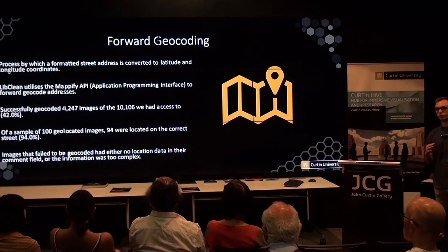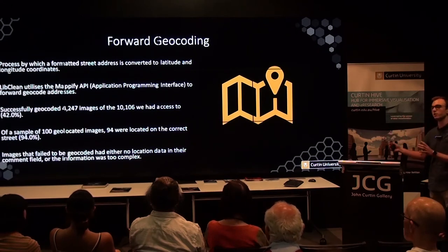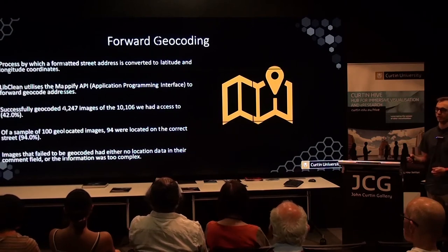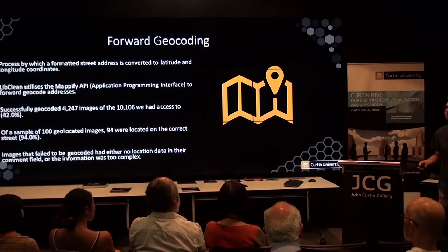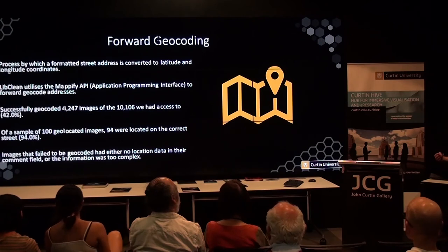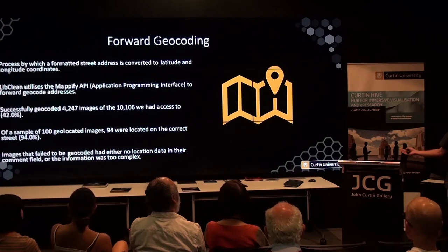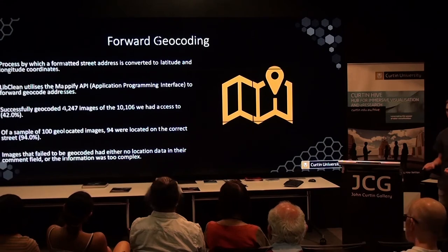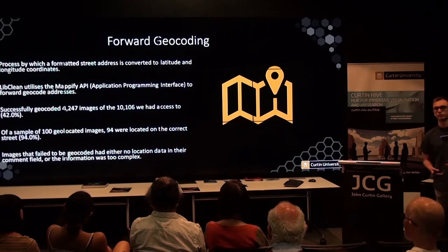We then took a sample of 100 of the 4,247 geocoded images to test location accuracy. 94 of these were located on the correct street. Numbering can be an issue for Mapify — some due to street addresses and numbering changing over time, and others due to buildings spanning multiple street addresses that Mapify can't handle correctly. Images we failed to geocode generally had either no location data, or location data too complex to parse.